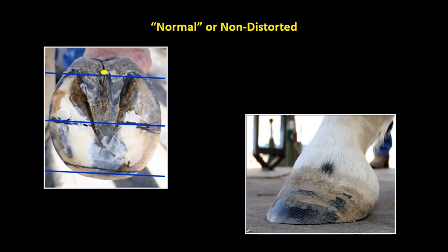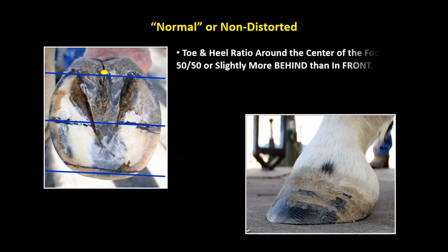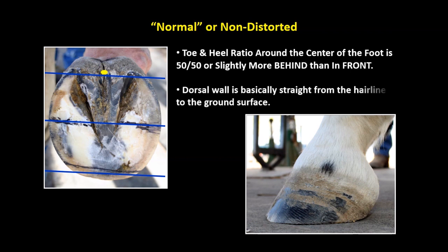Normal or non-distorted: toe and heel ratio around the center of the foot is 50-50 or slightly more behind than in front. The dorsal wall is basically straight from the hairline to the ground surface.